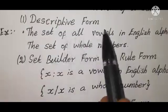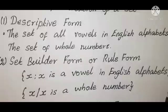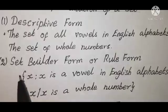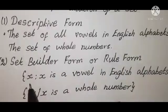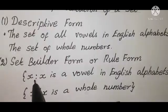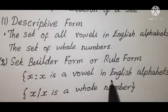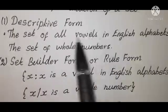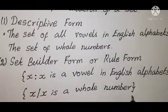Example in descriptive form: the set of all vowels in English alphabet. One more example: the set of whole numbers. Next, set builder form. We write: the set of all vowels in English alphabet as {x such that x is a vowel in English alphabet}. Next, the set of all whole numbers is written as {x such that x is a whole number}.